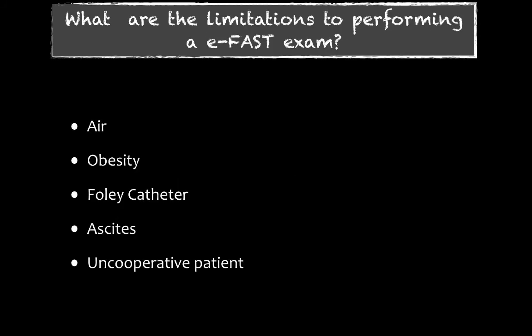What are the limitations to performing an eFAST exam? Air is our enemy — subcutaneous air clearly does not let us visualize the thoracic compartment, the abdominal compartment, or the pericardial sac. Obesity becomes increasingly difficult as our population becomes more obese, though it doesn't mean you shouldn't try. A Foley catheter is not your friend — you need to perform your FAST before they place a Foley. Once the Foley is placed, you lose your sonographic window into the pelvis and essentially have to call that an equivocal study, because you won't be able to see fluid collecting in the cul-de-sac.